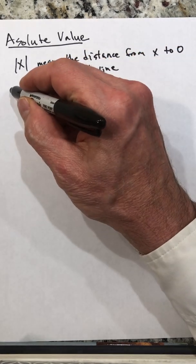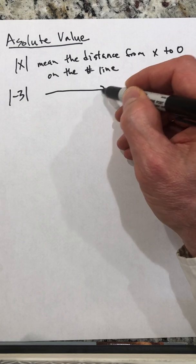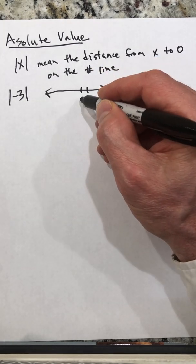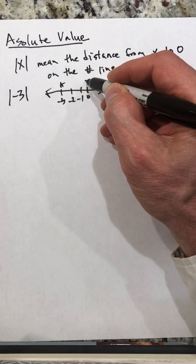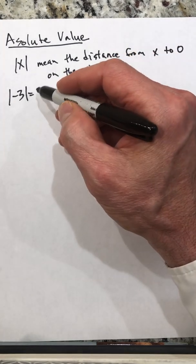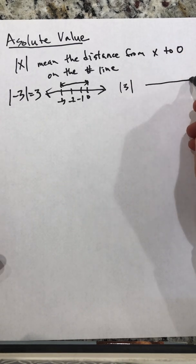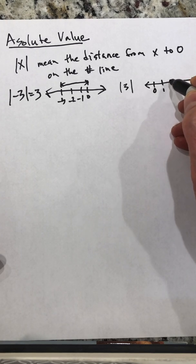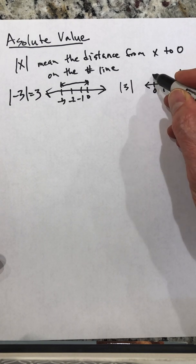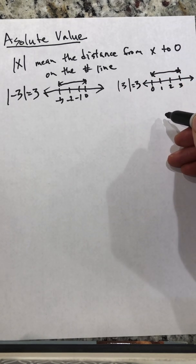If we write the absolute value of negative three, we're asking how far is negative three from zero on the number line. If we draw a number line with zero, negative one, negative two, negative three — that distance is three. So the absolute value of negative three is three. Likewise, the absolute value of three is also three, since the distance from zero to three is three.